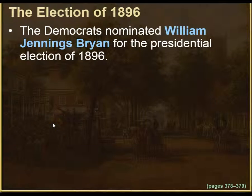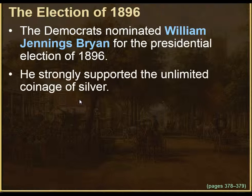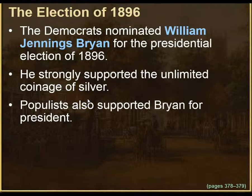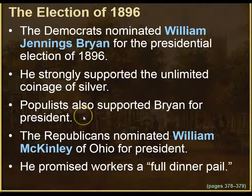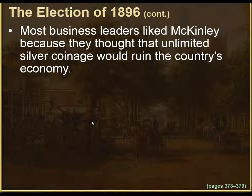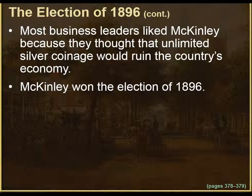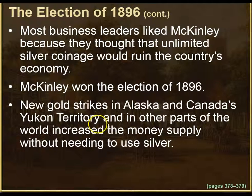In the election of 1896, Democrats nominated William Jennings Bryan, who strongly supported the coinage of silver. Populists also supported Bryan for president. The Republicans nominated William McKinley of Ohio, who promised workers a full dinner pail. Most business leaders liked McKinley because they thought unlimited silver coinage would ruin the economy, and McKinley won the election in 1896. New gold strikes in Alaska, Canada's Yukon Territory, and other parts of the world increased the money supply without needing silver.